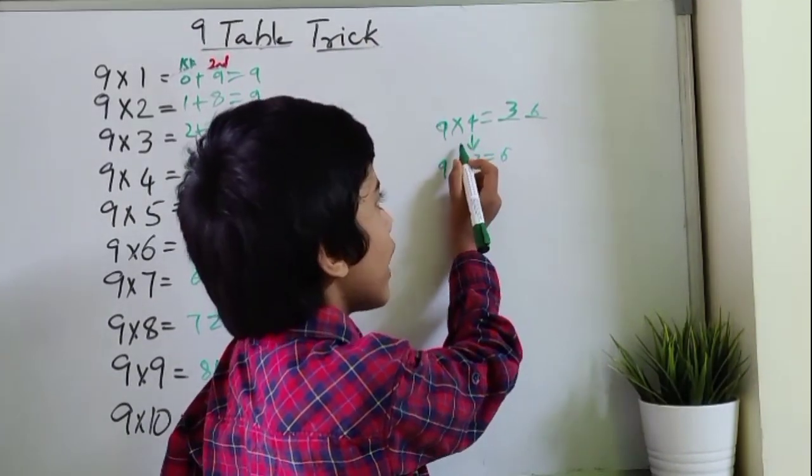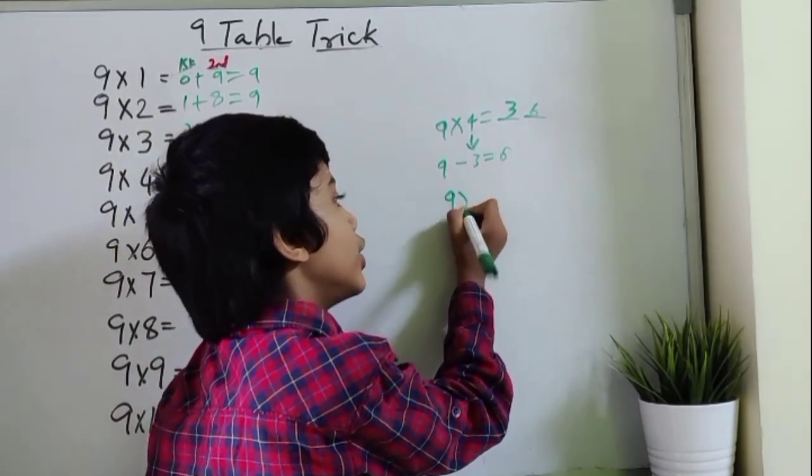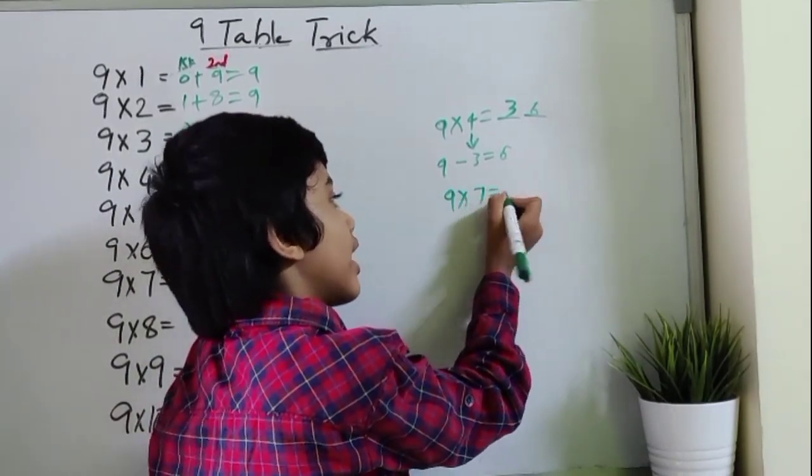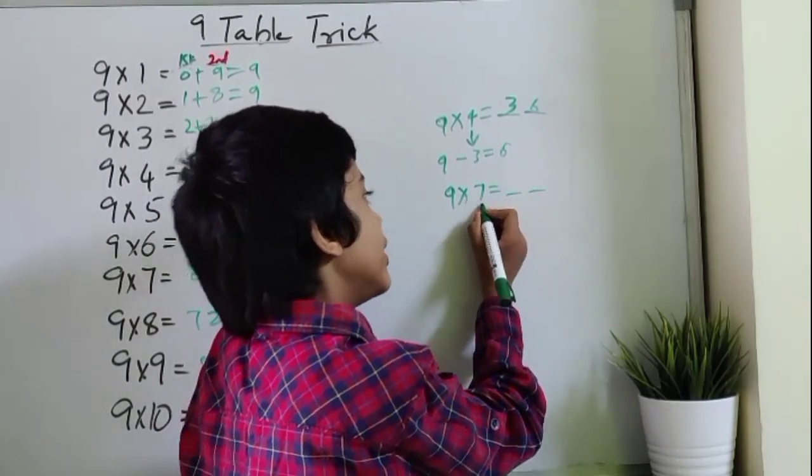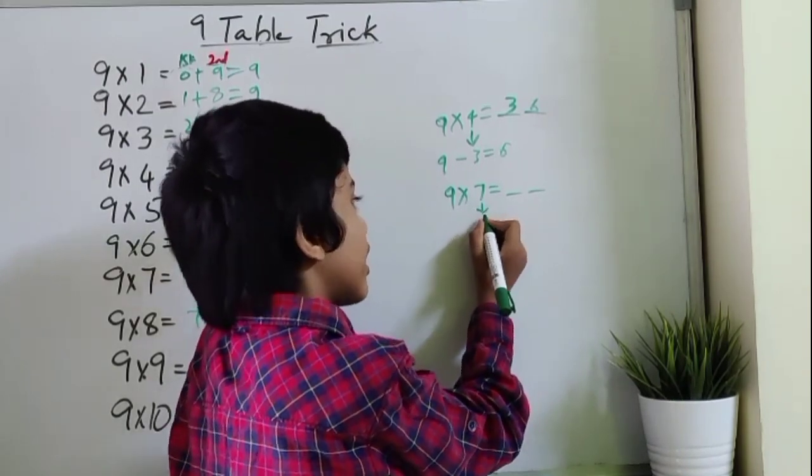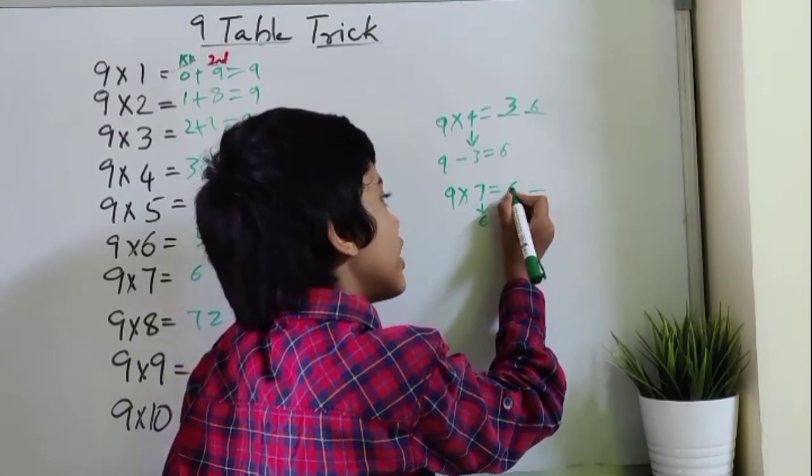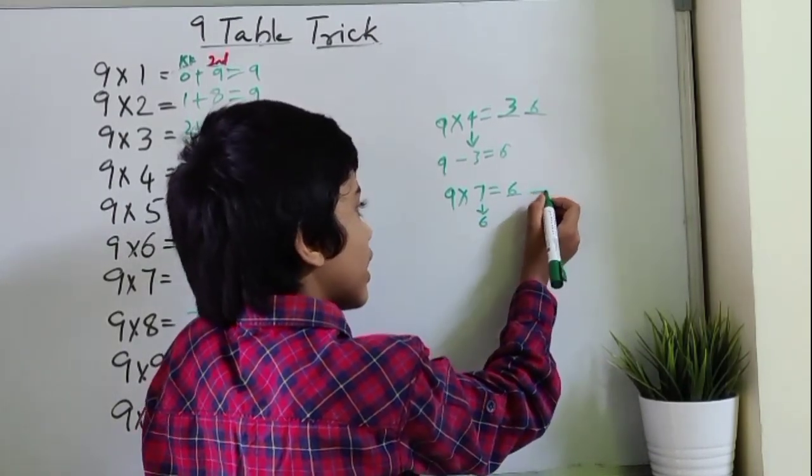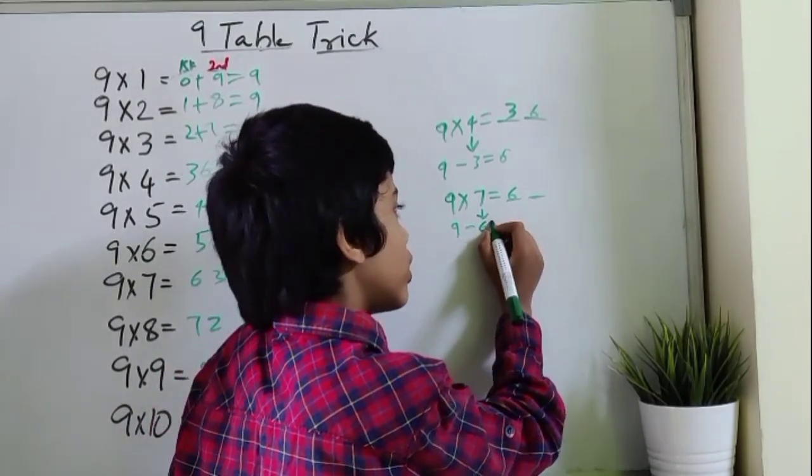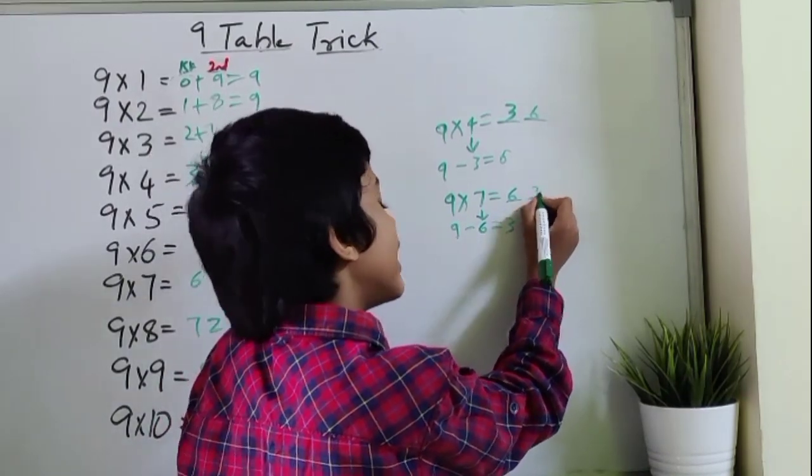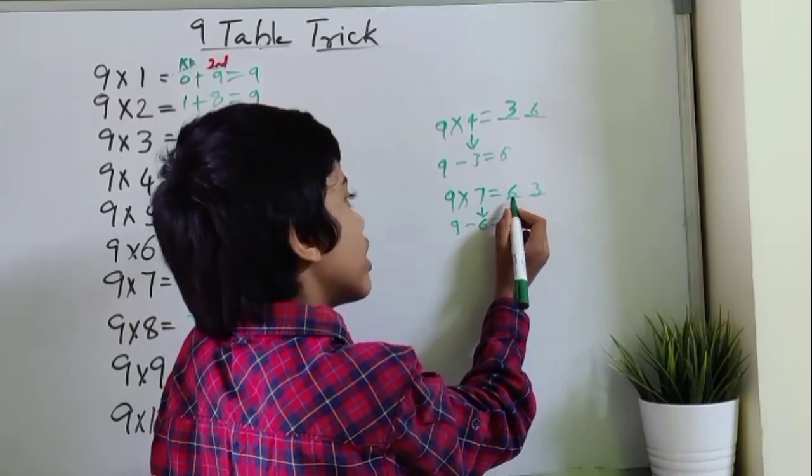Let us see another example. 9 into 7 equals 7 times 9. To find the first digit, you should find the number before 7, which is 6. So the first digit is 6. To find the second digit, subtract 6 from 9. So the answer is 3. So 9 into 7 equals 63.